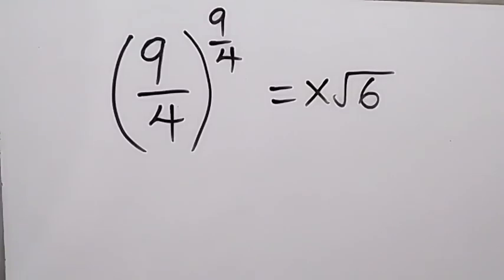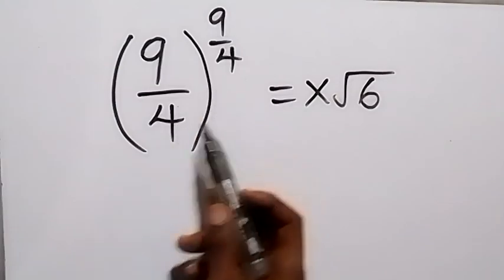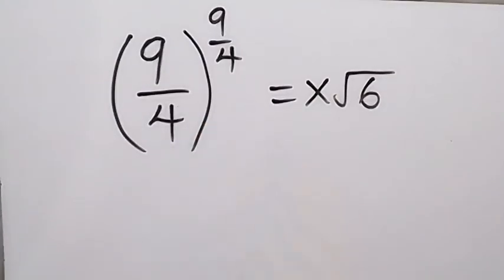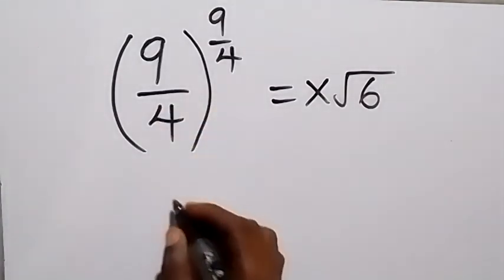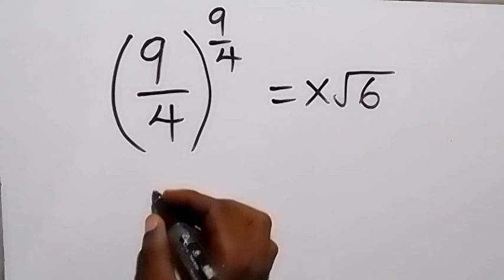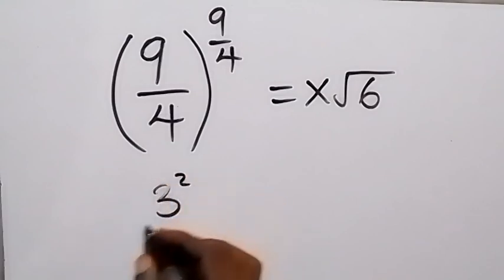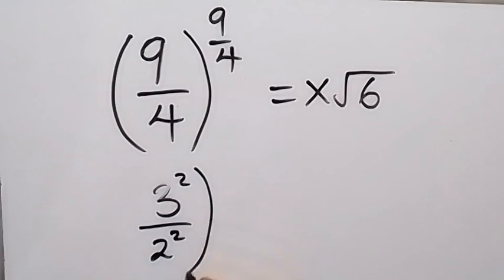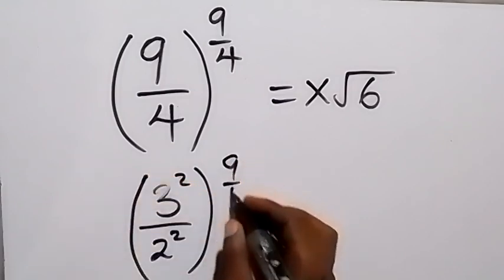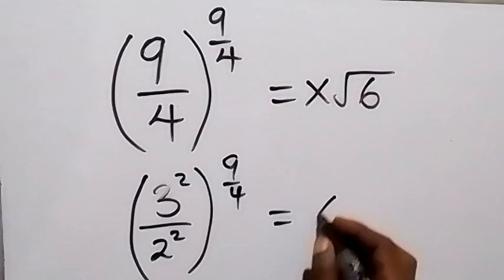Hello, you are welcome. How to solve this problem: 9 over 4, all raised to power 9 over 4, equals x root 6. From here we can write what is in the bracket as 3 squared over 2 squared, then all raised to power 9 over 4, which equals x root 6.